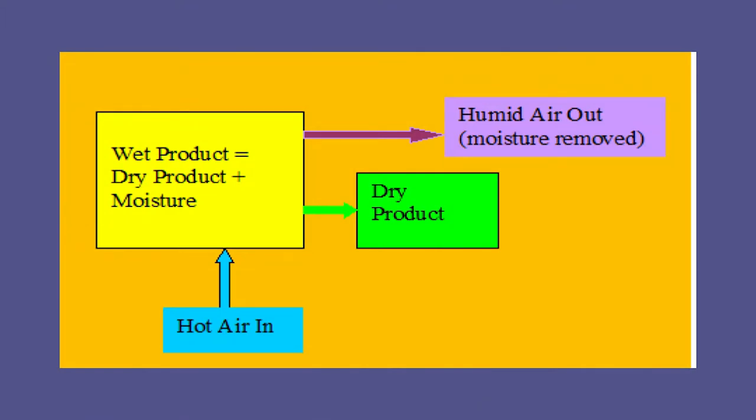Drying of a product is basically referred to as the removal of moisture from the product. Drying helps in reducing the moisture content of a product to a level below which deterioration does not occur, and we can store our food for different periods of time. Different food products have different levels of safe moisture content at which the food product can be safely stored for a longer duration. This schematic block diagram helps us understand what we actually do in the drying process.